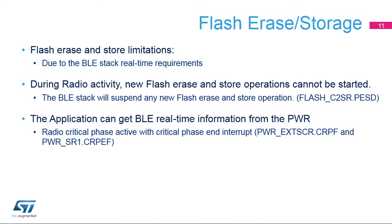To guarantee correct real-time operation of the radio system during critical radio phases, low-latency access is granted to the flash memory. During this phase, it is not possible to initiate new erase and store flash options. The Cortex-M4 can obtain real-time radio system information using the radio critical phase flag and interrupt.